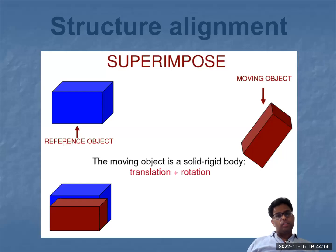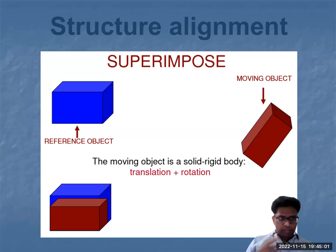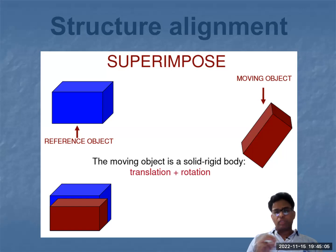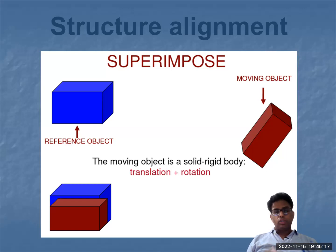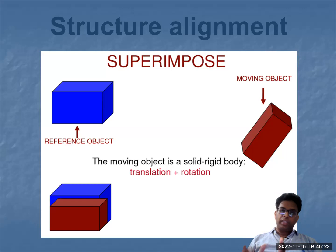Today the presentation is about structure alignment, which is related to protein structure alignment. There are some important concepts to keep in mind when you have to superimpose two protein structures. One structure should be the reference object, and the other protein structure should be transitioned, moved, or rotated.